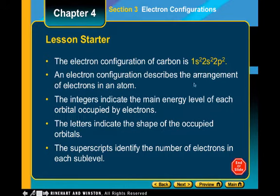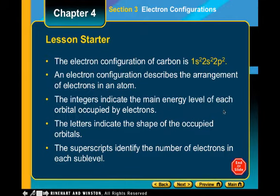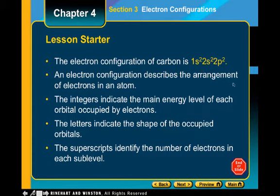The integers describe the main energy level — this is the first energy level, and these are the second main energy level. They're in the same main energy level but a different sublevel. The letters indicate the shape or sublevel of the orbital, and the superscripts tell us how many electrons are in each sublevel. Overall, carbon has 2 plus 2 plus 2, so we have 6 electrons.